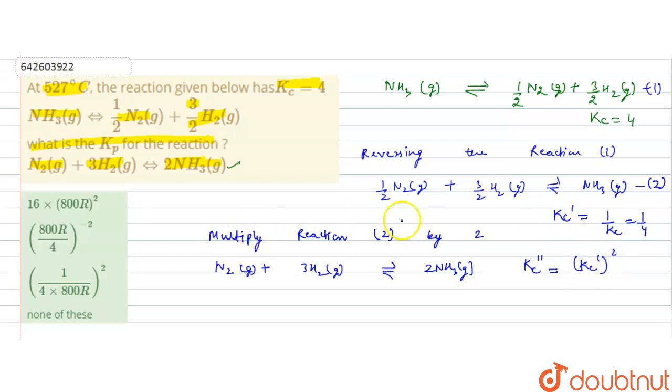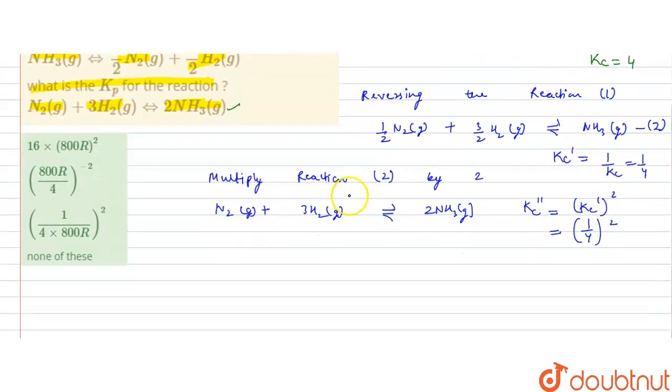Because when an equation is multiplied by that factor, its Kc is equal to the power of the Kc of other factor. So that is Kc dash is 1 by 4. So it would become 1 by 4 square. So now we have to find out the Kp for this reaction.